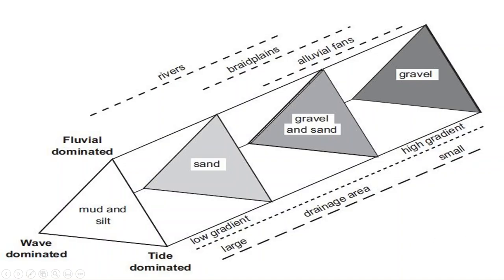Deltas are acted upon by three major defining forces that influence their formation as well as the facies of the rocks that would be formed at a given delta over time. These major processes are waves, tides, and currents, or rivers. Deltas are classified based upon how much each of these individual factors influenced their given formation, because there is a continuum between each of these actors.